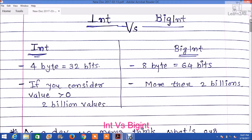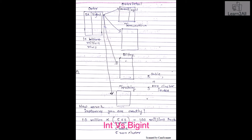Now, why avoid bigint if your requirement is just integer? If you use bigint instead of integer, how much space are you wasting? Here is an example. Suppose in your database you have an order table which has a column named id and you have declared its data type as bigint, and your database table has 2 billion plus rows.